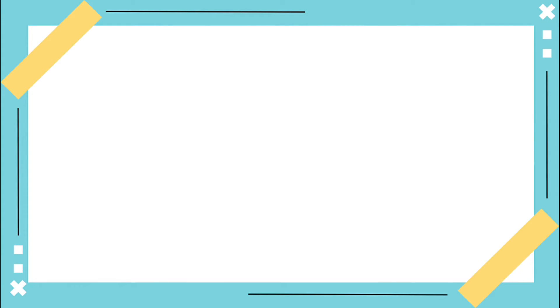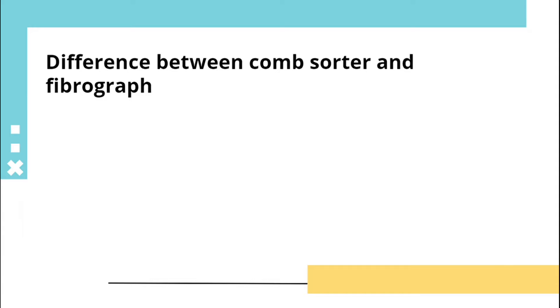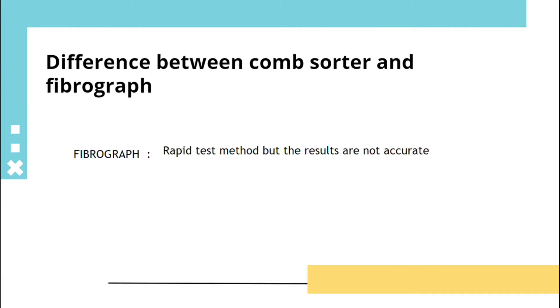Hello guys, welcome to TIPS, a platform for textile problems and solutions. Now we are going to learn about uniformity ratio and index for cotton and polyester staple fibers, and the difference between comb sorter and fiber graph.